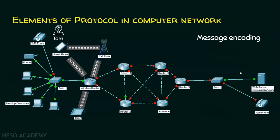If Tom wants to access the same amazon.com but with a smartphone instead of a computer, this smartphone is connected to the network with the help of a wireless medium, and the smartphone converts the data into waves because the medium is wireless. In both cases, whether it is a wired or wireless medium, protocols convert the data into signals or waves by appropriately identifying the device it is connected to. The data received by the router is forwarded to router 1 or router 2, and the protocol in this router converts those waves into signals. This is the very important part of a protocol.